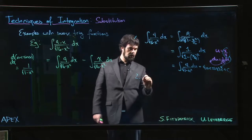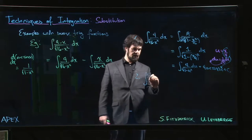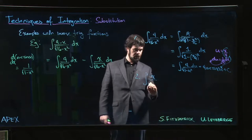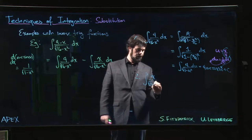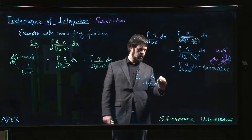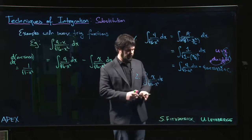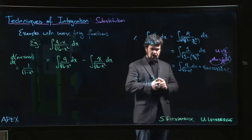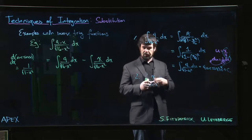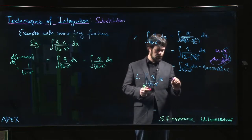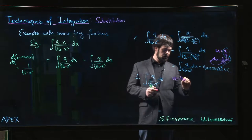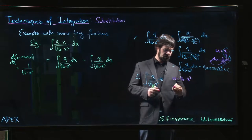So for the second one, we have x over the square root of 16 minus x squared. And for this one, as I said, it's simple substitution. We just want to do u equal to 16 minus x squared.